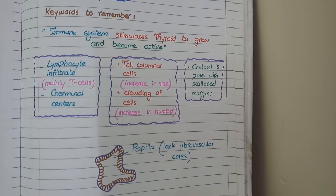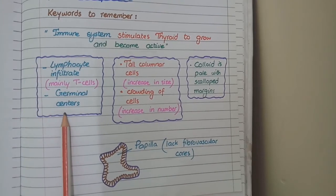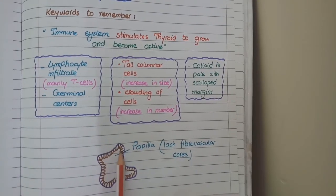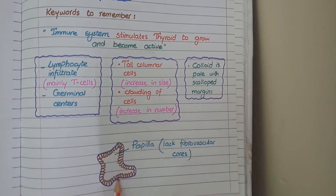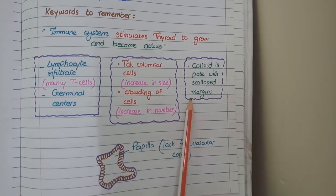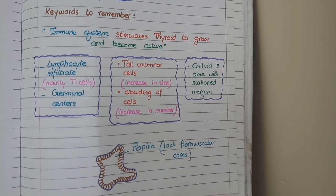To summarize the microscopic features of Graves' disease: you see lymphocytic infiltrates that form germinal centers, tall columnar cells, crowding of cells causing formation of papilla, and pale colloid with scalloped margins. This concludes our discussion on the pathological features of Graves' disease.